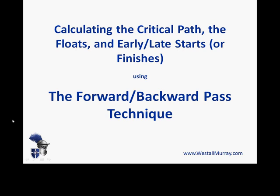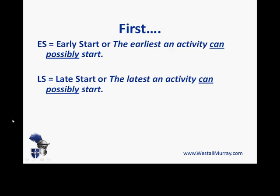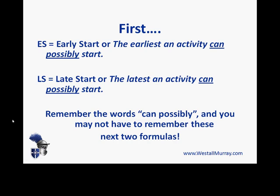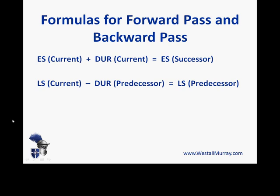This time we're going to use a more in-depth method for calculating the critical path and also float and slack of activities using the forward and backward pass technique. Early start is the earliest an activity can possibly start in the network, and late start is the latest that an activity can possibly start. Similar definitions apply for early finish and late finish. Remember the words 'can possibly' in both definitions. The formula for the forward pass: early start of the current activity plus the duration of the current activity gives us the early start of the next activity. On the backward pass: the late start of the current activity minus the duration of the predecessor gives us the late start of that predecessor.